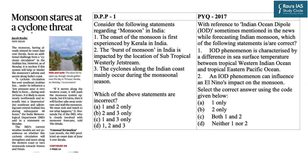Our first question is from today's The Hindu Delhi edition, from the topic 'Monsoon Stares at a Cyclone Threat.' The IMD has said that there is formation of a low pressure depression region in the Arabian Sea which can have a favorable or detrimental impact on the arrival of monsoon in India. Recently there has been a delayed onset of monsoon by four days.